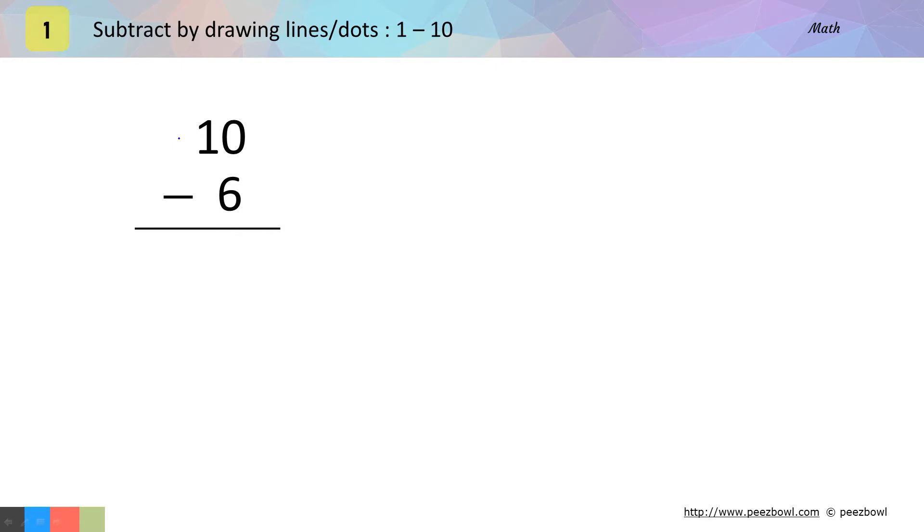Okay, in this case you can see first you have 10 and below it there is 6. In front of 6, there is a minus sign. This way of subtraction is called vertical subtraction. In this example, you need to subtract 6 from 10. Before I start, let us learn few subtraction terms.